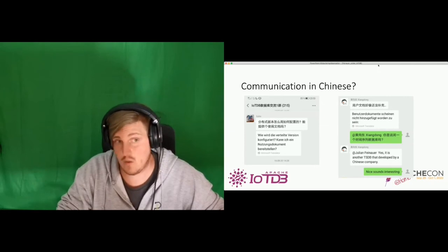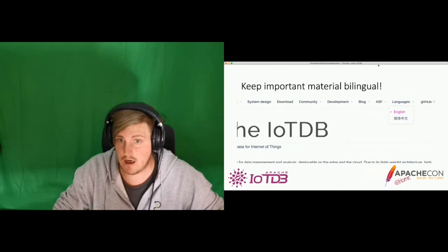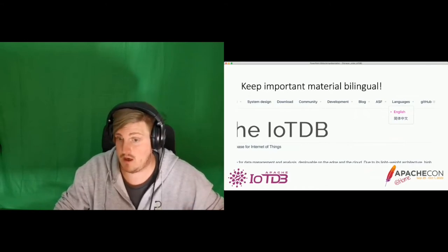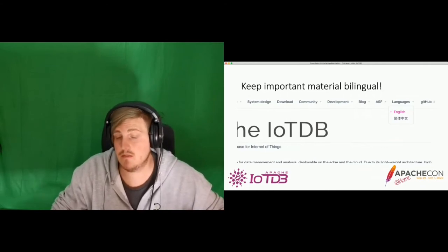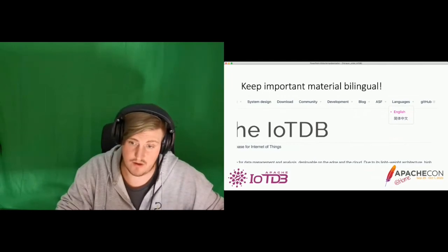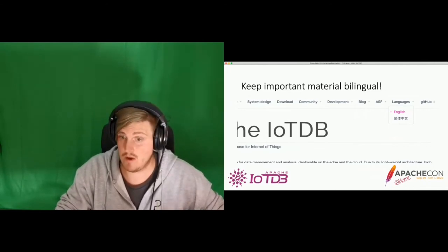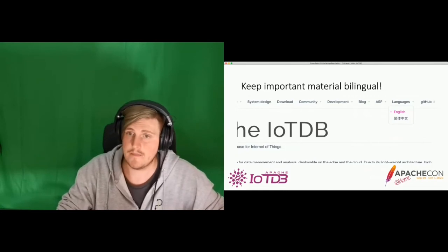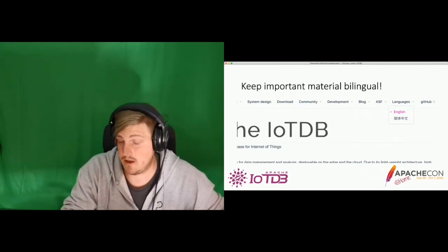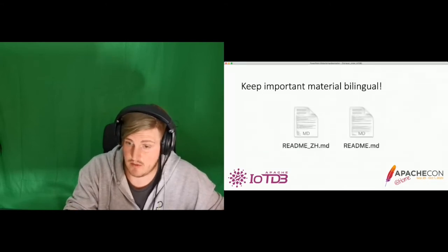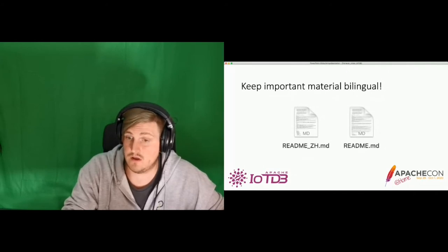Another thing which we did and still do is to maintain the homepage bilingual. So we have English and Chinese, and basically each document is copied, which is some work, but it makes it easy for users from both language regions to easily jump into the project. It makes it easy for users to get a glimpse and have a place to ask for help whenever they need it. Another thing is the README document — in our case we also have a Chinese README, because we want to be inclusive for all those primary Chinese-speaking people, and it's important. It makes it really easy for people to adopt the project.